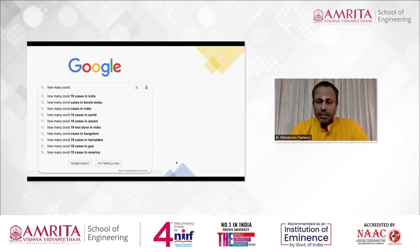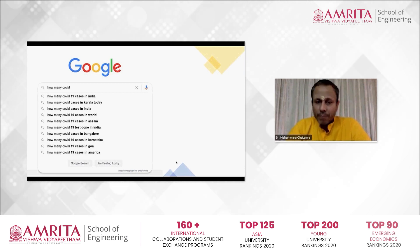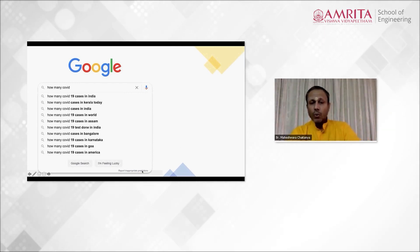Prediction is generated from data by a computer program. You can see at the bottom, 'Report inappropriate prediction.' Even Google is giving us an opportunity to say this prediction is wrong. Even that is being learned—it will keep learning how many inappropriate predictions were reported by users on one specific topic.